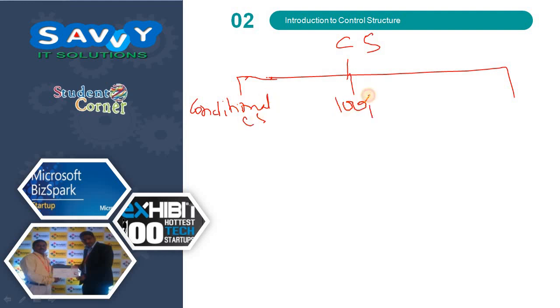One is conditional control structures. Second one is loop control structures. Third one is unconditional control structures.